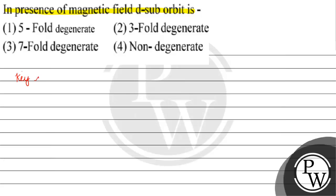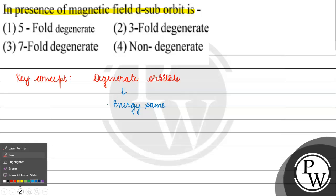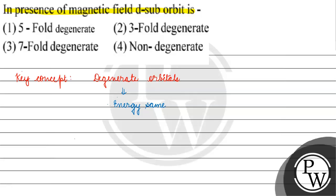The key concept for this question is degenerate orbitals. If we talk about the presence of a magnetic field, D sub orbit is 5-fold degenerate.